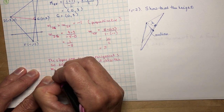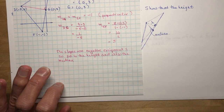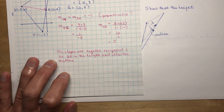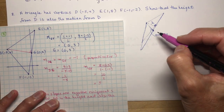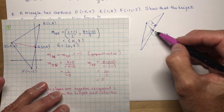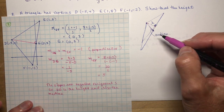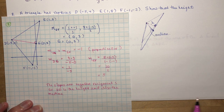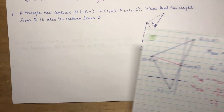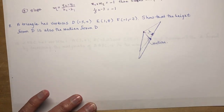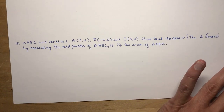That's question number 8. I thought I'd do that one because it was a little difficult to understand what they were asking. This of course helps you see how a median and a height are not always the same thing — it has to be a right angle for that to be the case.